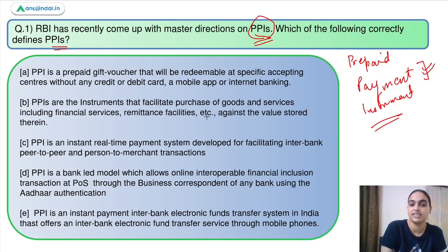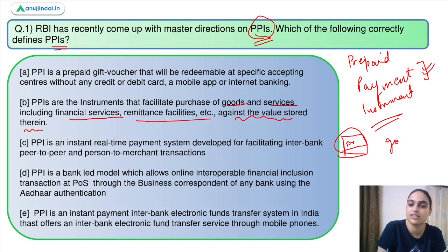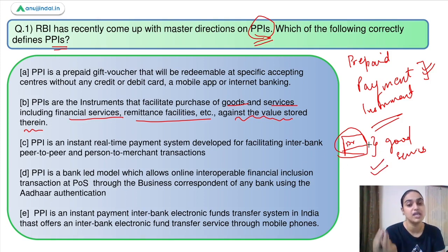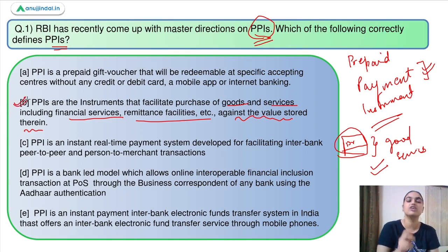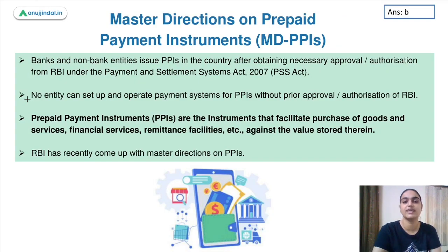PPIs are instruments which facilitate the purchase of goods and services including financial services and remittance facilities, against the value stored therein. Your e-wallets and metro cards are all prepaid payment instruments. So the answer to question one is option B. Now instead of going to question two directly, let's first discuss the entire set of master directions and then cover the remaining three questions at the end.